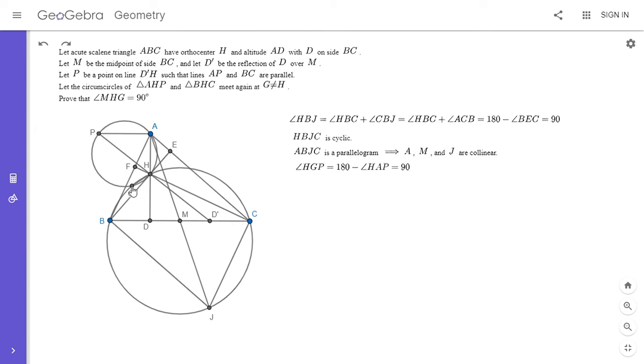So angle HGP is 90 degrees and angle HGJ also has to be 90 degrees, so that means P, G, and J are collinear. We know that HGJ has to be 90 degrees because it intercepts the same arc as HBJ. So angle HGJ equals angle HBJ which is 90 degrees. If HGP is 90 degrees and HGJ is 90 degrees, then since they add up to 180, that means P, G, and J have to be collinear. So we can draw a line through those three points.